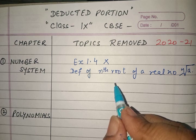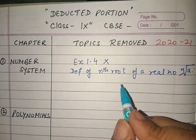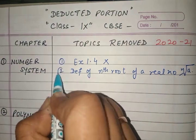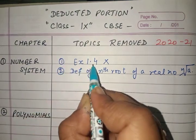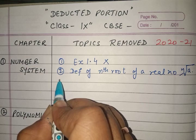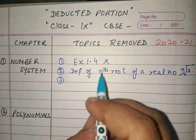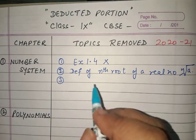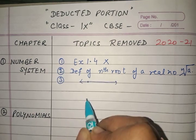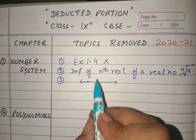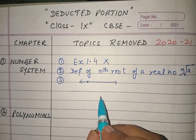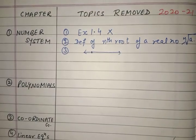The third deletion is the explanation that every real number is represented by a unique point on the number line, and conversely every point on the number line represents a unique real number. So these are the three things deleted from Chapter 1. The second chapter is Polynomials.